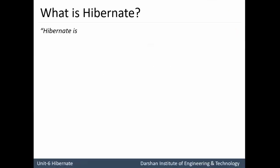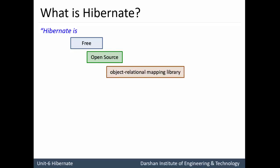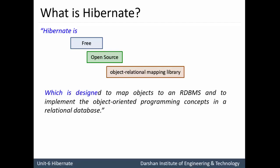So the first question is: what is Hibernate? Hibernate is a free open source object relational mapping library. Object relational mapping means the object of a Java class is communicated with a relational database, which is designed to map objects to RDBMS and to implement the object oriented programming concept in relational databases. In Java, every attribute is considered as an object, whereas in RDBMS every record is considered as a tuple or a row.